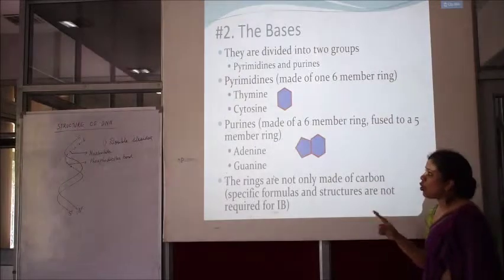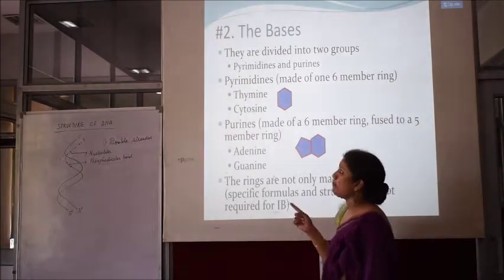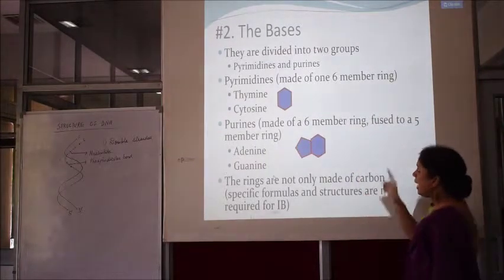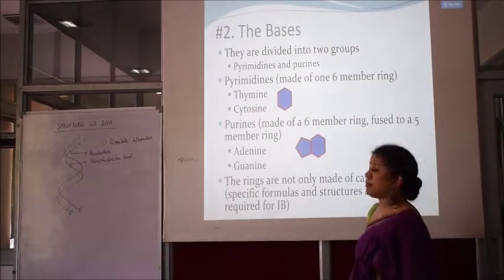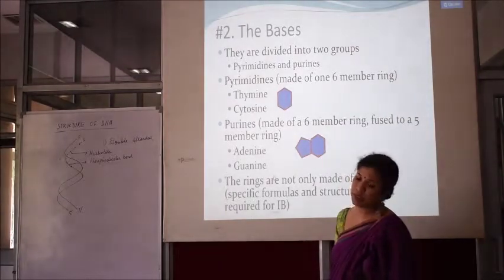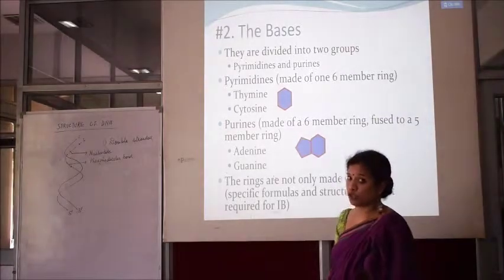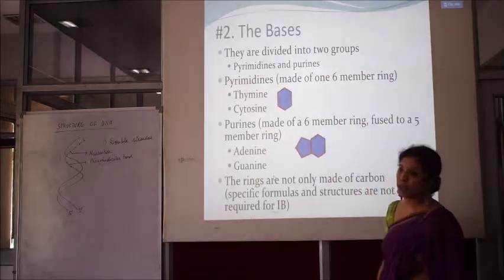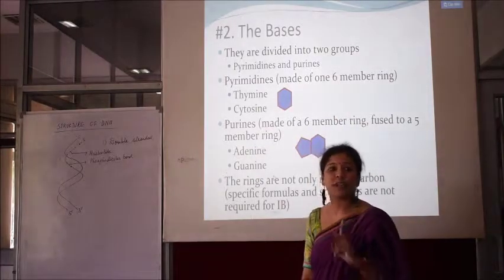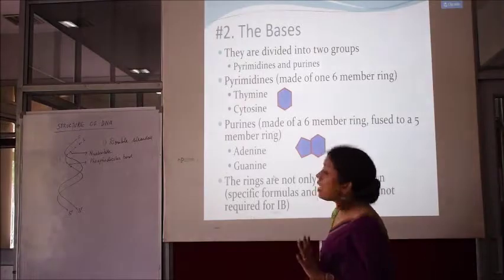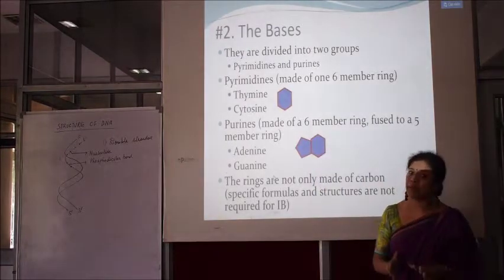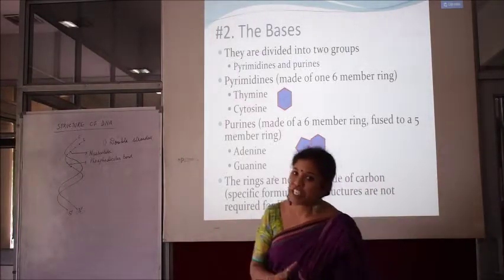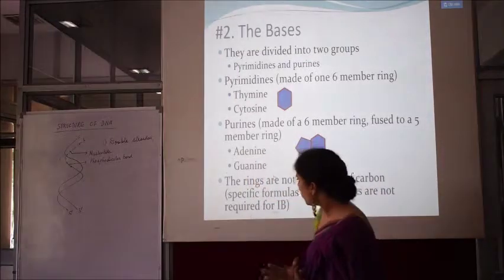Purines always base pair with pyrimidines, and pyrimidines always base pair with purines. In DNA there are two types of pyrimidines — thymine and cytosine. However, in RNA, there is uracil instead of thymine, so RNA has two pyrimidines: uracil and cytosine, whereas DNA has thymine and cytosine. That is a basic difference in the base composition of DNA and RNA. The rest remains the same.